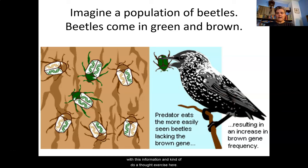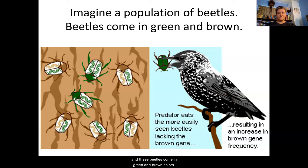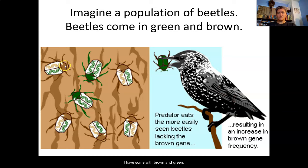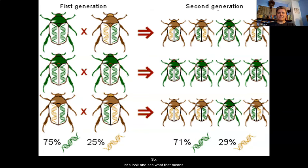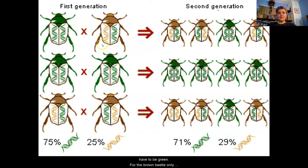Now we're going to do a thought exercise. Imagine there is a population of beetles that come in green and brown colors. You can see their natural habitat on tree bark and the chromosomes designed on the beetle showing the alleles — some with brown and green. These are brown beetles, and the ones with two green alleles are green beetles. Predators can see the green beetles more easily than the brown ones because of the camouflage effect. This means brown is a dominant allele and green is the recessive.